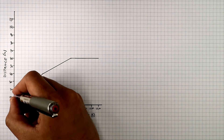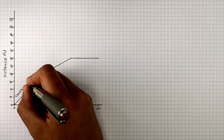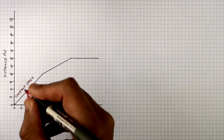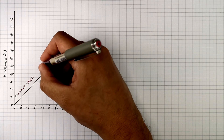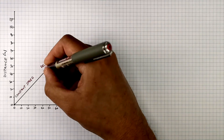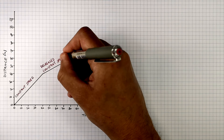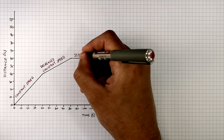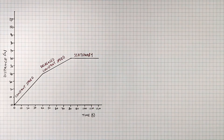So this object starts its journey at a constant speed of 1 metre per second, and then at 40 seconds it decreases its speed to 0.5 metres per second. And for the last 40 seconds the object is stationary.